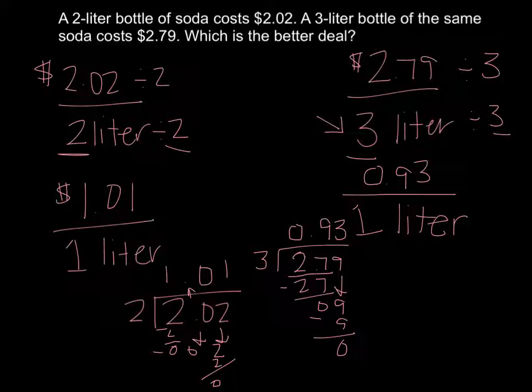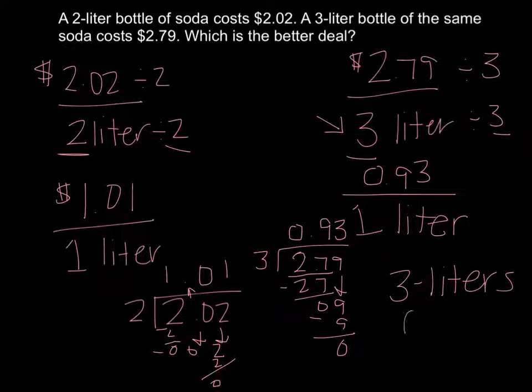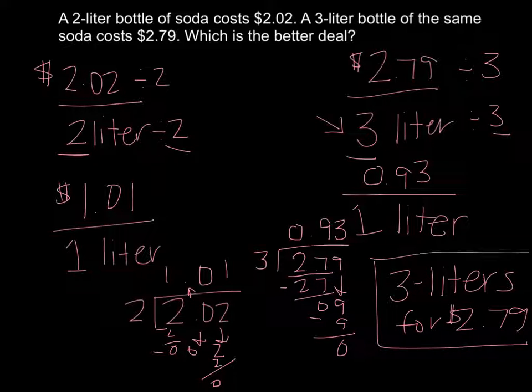For one liter of soda, if you buy the 3 liters it will only cost you $0.93 per liter. If you buy the 2 liters it will cost you $1.01. So which is the better deal? The better deal is 3 liters for $2.79. That is our better deal. Now you'd have to look at it - if you're not going to drink 3 liters of this soda, if you don't need that much, you wouldn't buy that much. But if you're going to drink it anyways, you really want to get the better deal.